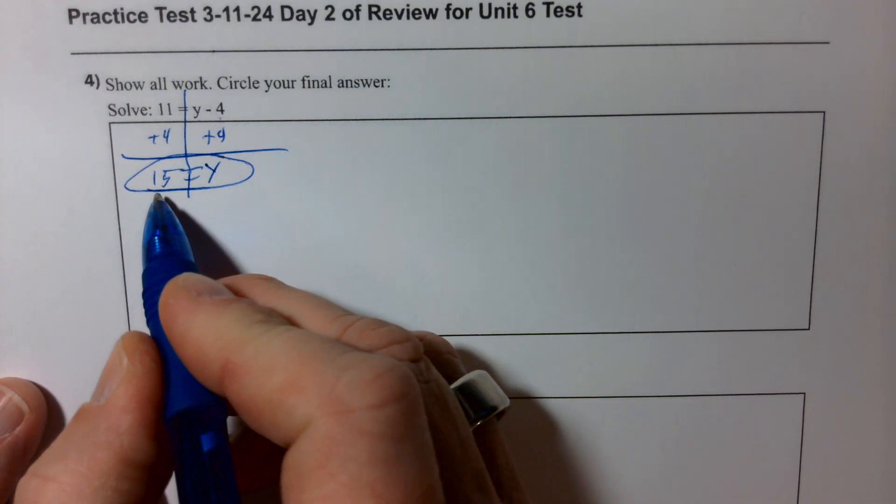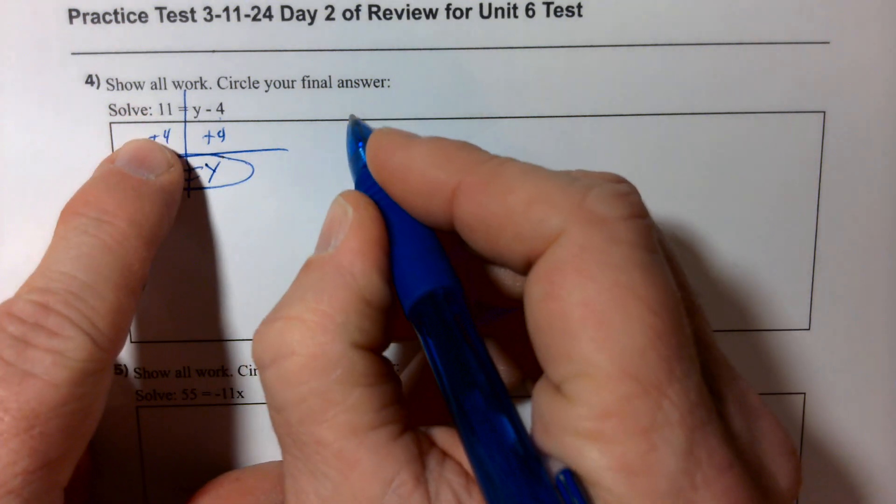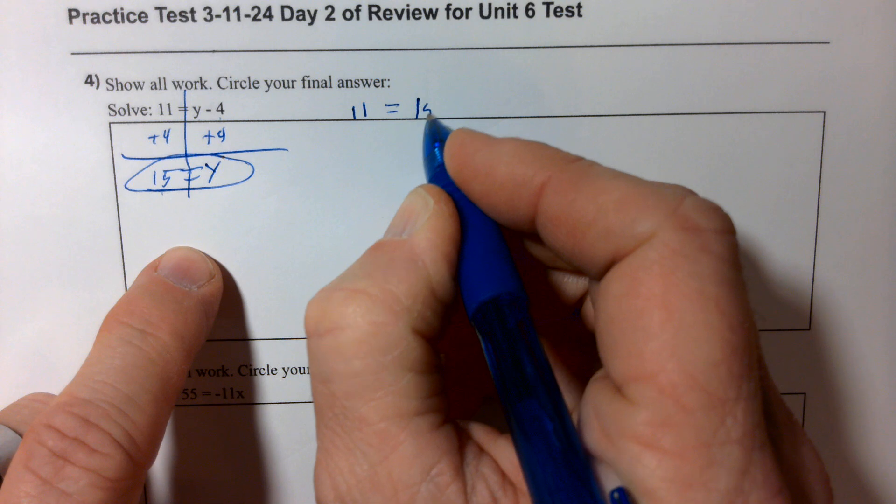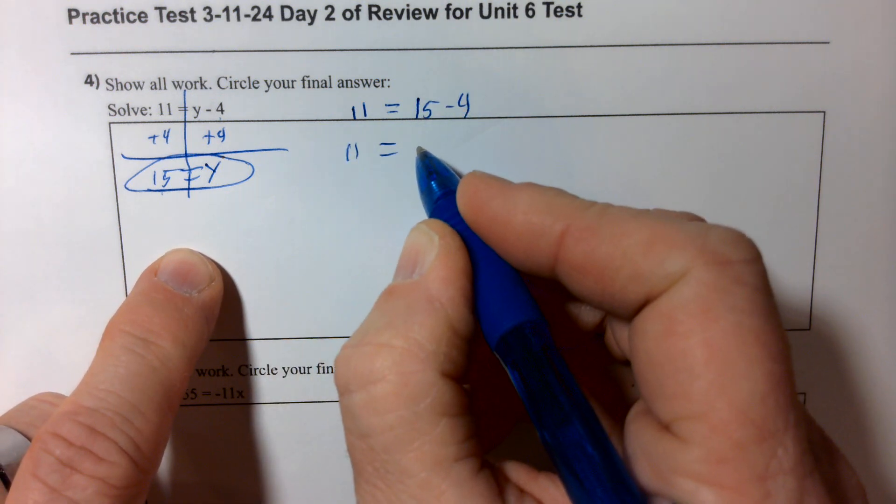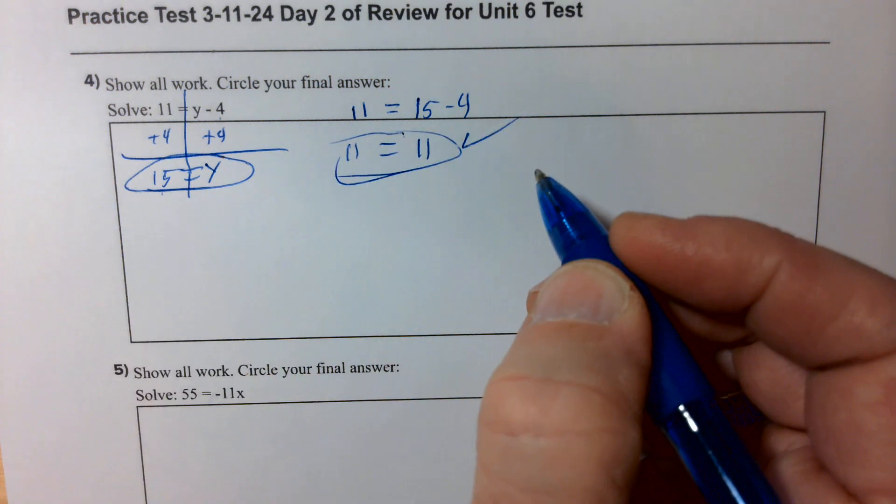Now, to check that, we stick 15 back into the original equation for y. So I have 11 equals 15 instead of y minus 4. 11 equals 15 minus 4 is 11. 11 equals 11, which is true, which means I got it right.